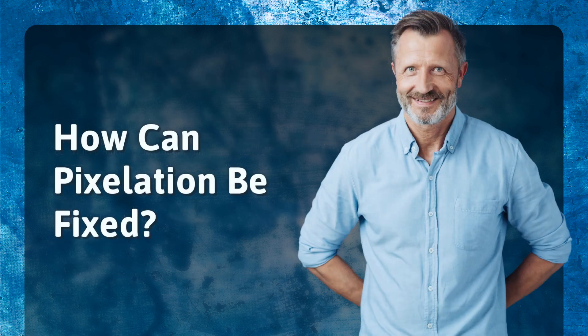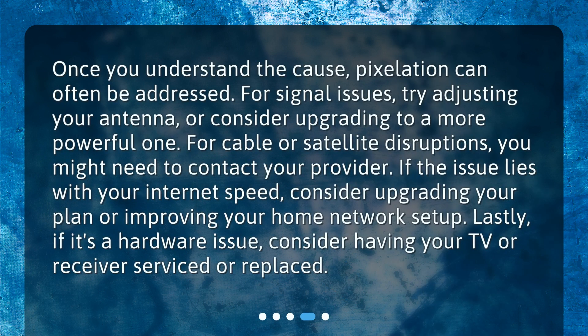How can pixelation be fixed? Once you understand the cause, pixelation can often be addressed. For signal issues, try adjusting your antenna or consider upgrading to a more powerful one. For cable or satellite disruptions, you might need to contact your provider. If the issue lies with your internet speed, consider upgrading your plan or improving your home network setup. Lastly, if it's a hardware issue, consider having your TV or receiver serviced or replaced.